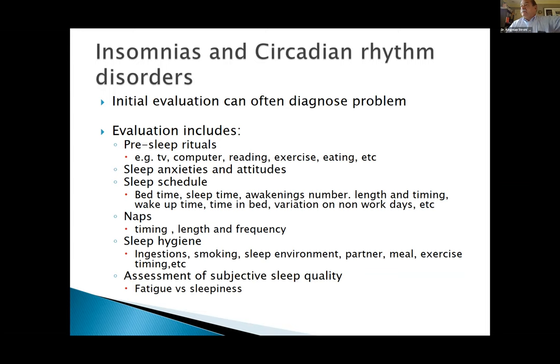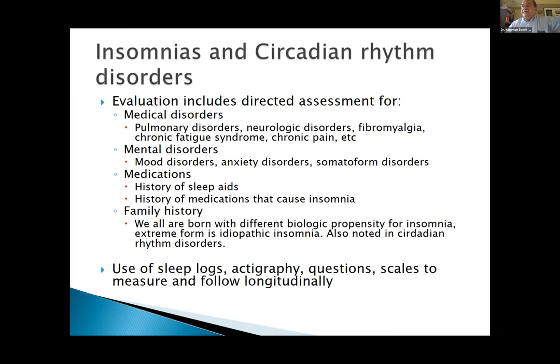To identify insomnia versus circadian rhythm disorders, do a directed assessment for medical disorders, mental disorders, medications, and family history. Use a sleep log — it can be done with paper and pencil and is very helpful. Family history is important: there is a biological propensity for insomnia; the extreme form is idiopathic insomnia. Actigraphy is used at the VA because instruments are available, but not at Metro or UH because there's no billing code. Follow these longitudinally.